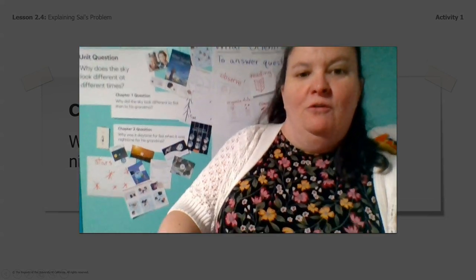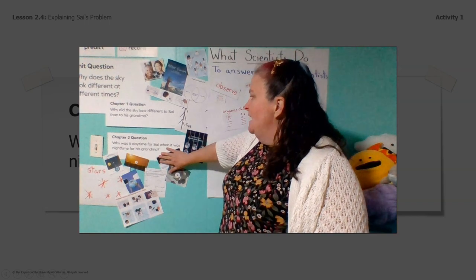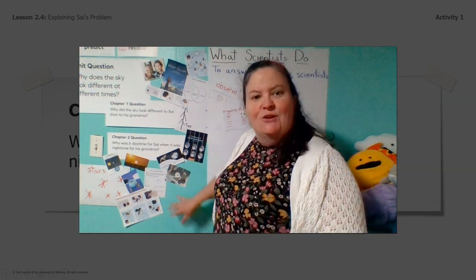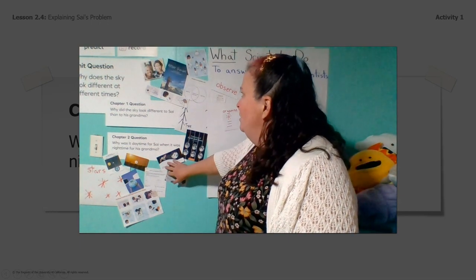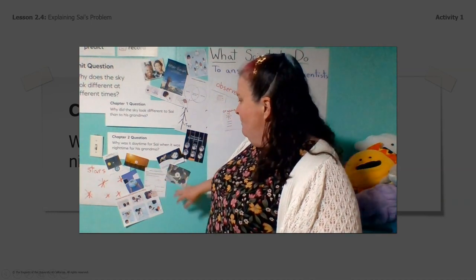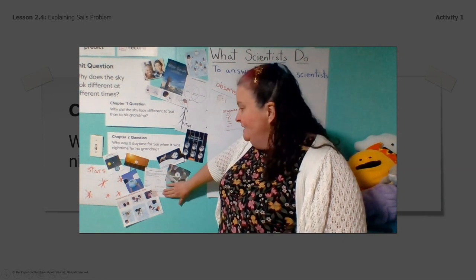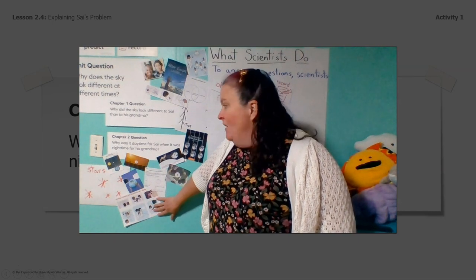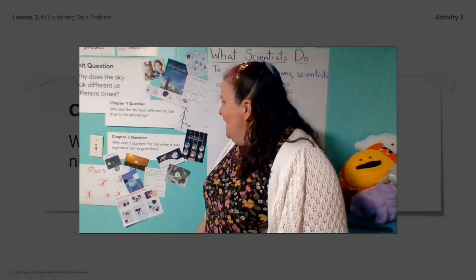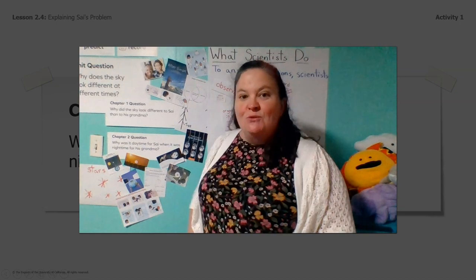We look over here at our wall. Our question is: why was it daytime for Psy when it was nighttime for his grandma? Look at all of the things we did so far in this unit. We took a closer look at our book After Sunset. We watched a couple of videos about the shape of the earth. We did some pages together about daytime and nighttime. We found day and night on the globe, played Mount Nose, and put stickers on our globe to talk about daytime and nighttime.